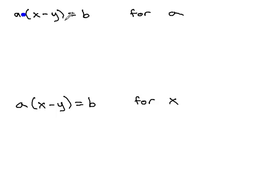To get rid of that a times x minus y, just like a times 7 we get rid of by dividing by 7, we can divide by that entire quantity, x minus y, in parentheses.